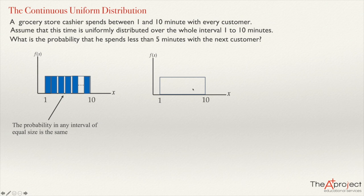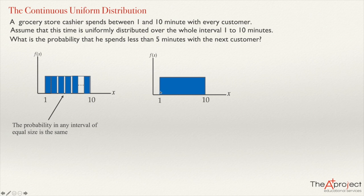What is the probability that the cashier spends between one to ten minutes with the customer? That will be all this area here — the entire area forms the probability that the cashier spends between one and ten minutes with the customer. This is the hundred percent, which in terms of probability is equal to one.